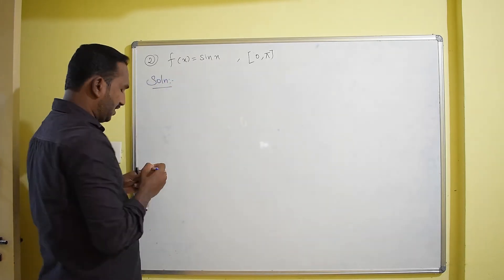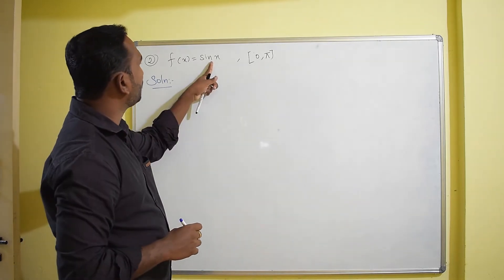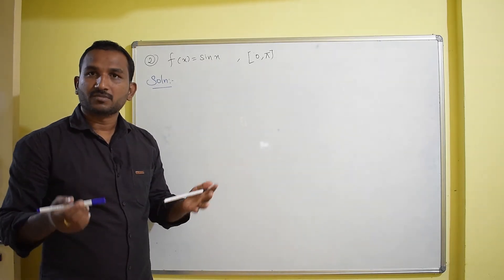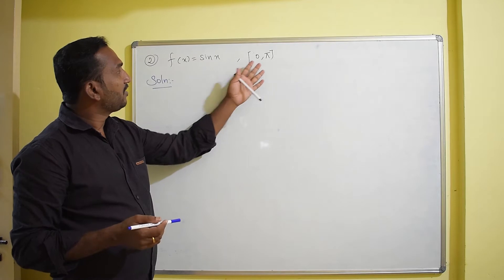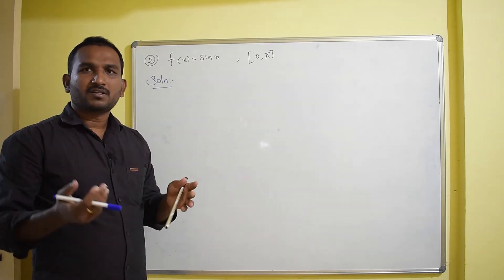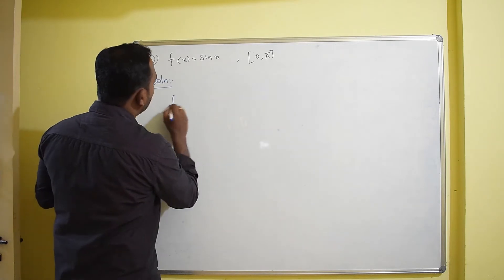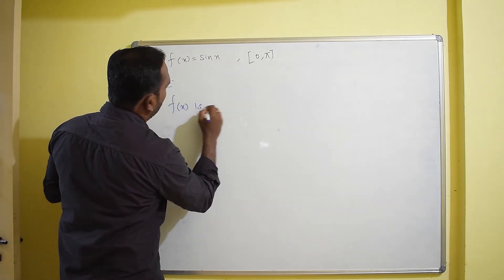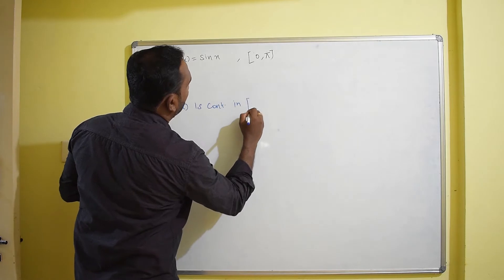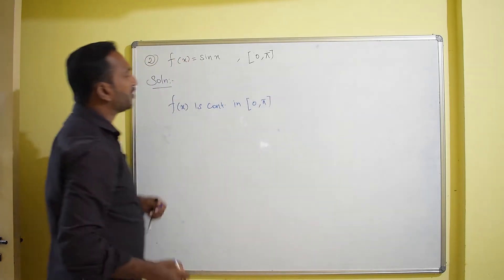First, we want to verify that f(x) is continuous. Substitute 0 — you get sin 0, which equals 0. Substitute π — sin π also equals 0. We get finite values at both endpoints, so f(x) is continuous in the closed interval [0, π].